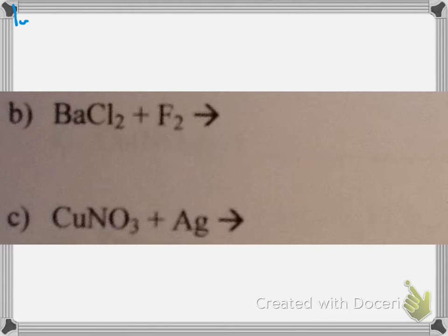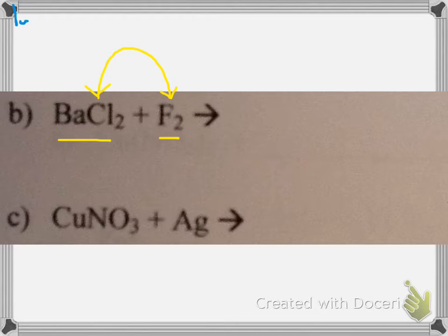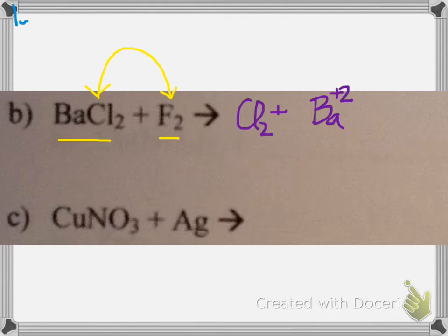Letter B: this is a single replacement reaction — an element reacting with a compound. This element is a nonmetal (fluorine), so it replaces the nonmetal (chlorine). Checking the activity series: fluorine is higher than chlorine, so this reaction can occur. Chlorine is now by itself as an element, and barium's new partner is fluorine — forming BaF2 (ionic compound). This skeleton equation is already balanced.